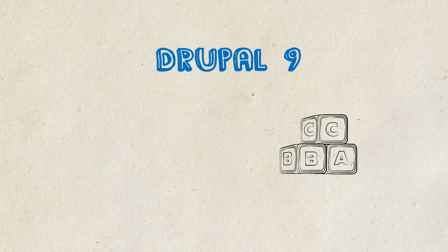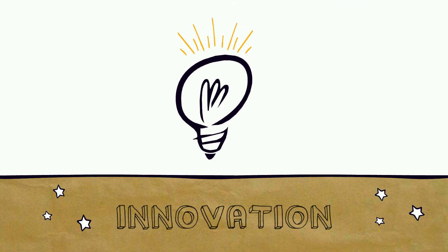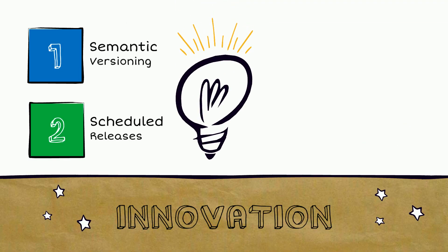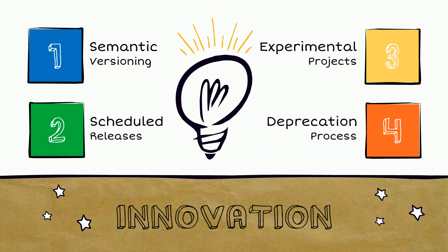That's why we say Drupal 9 was built inside Drupal 8. Semantic versioning, scheduled releases, experimental projects, and the deprecation process all help ensure that Drupal users get access to new features and APIs without having to wait for a new major release.